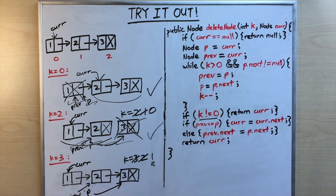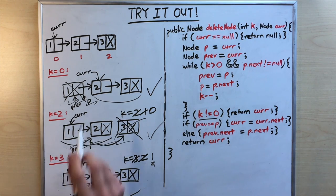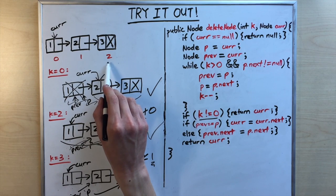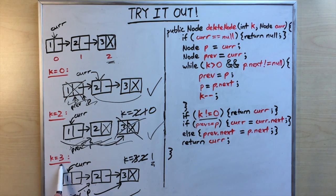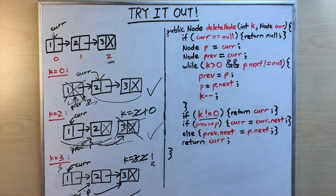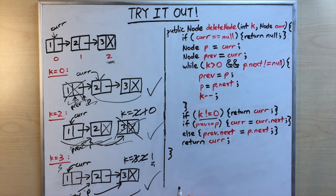This is the correct behavior: our linked list only goes up to index two, so k equals three is invalid. We return the original linked list untouched. Three for three — that's how we do things.